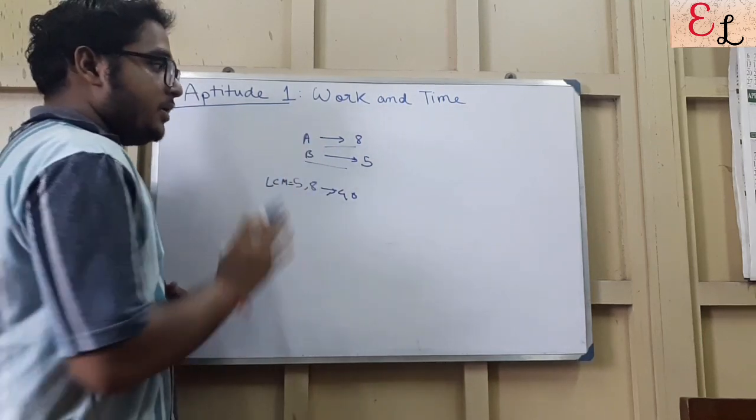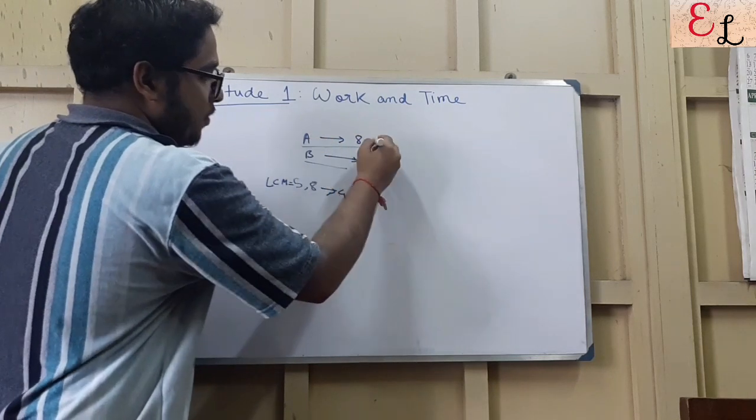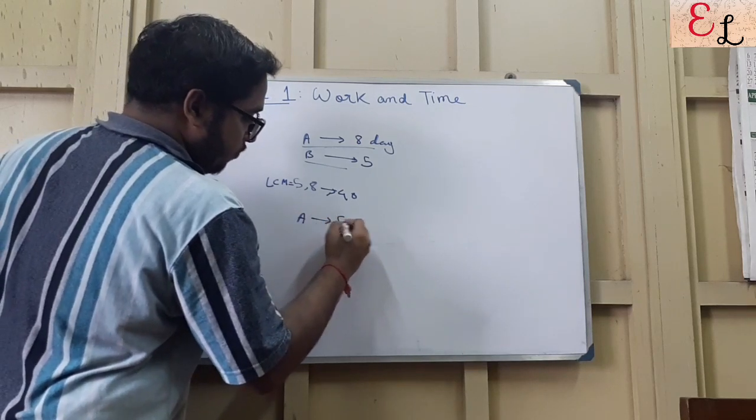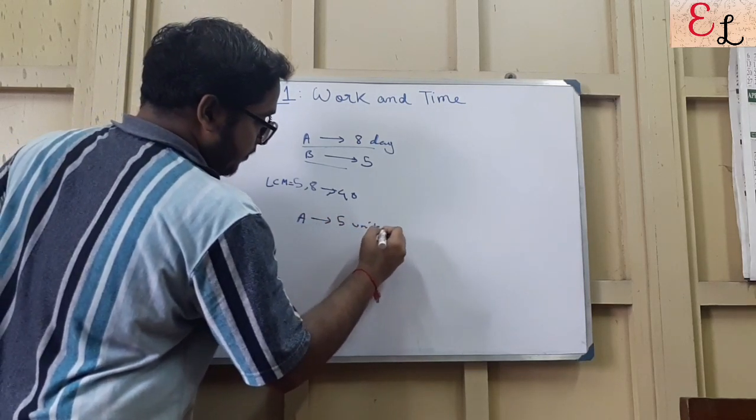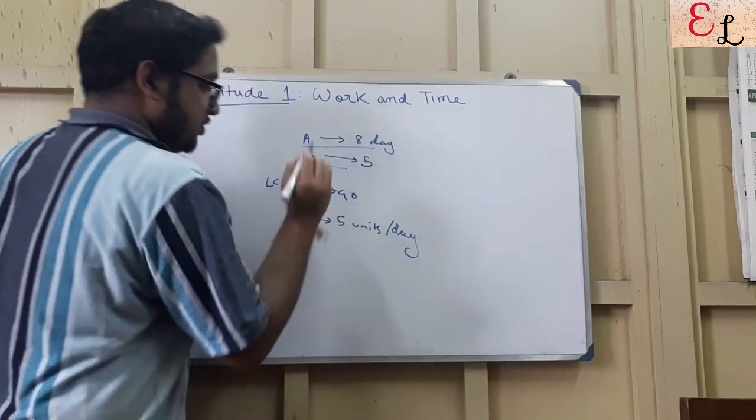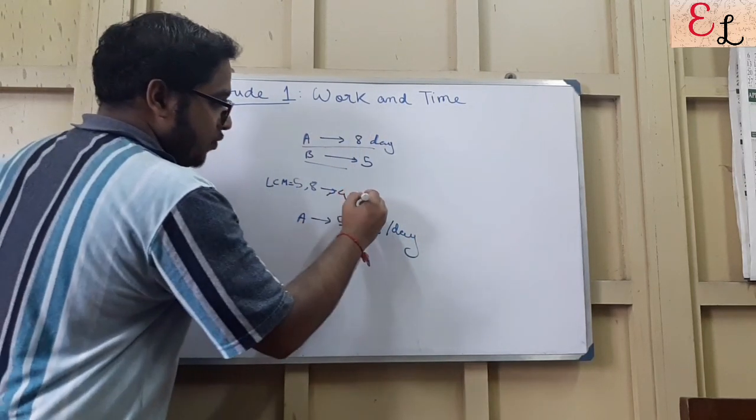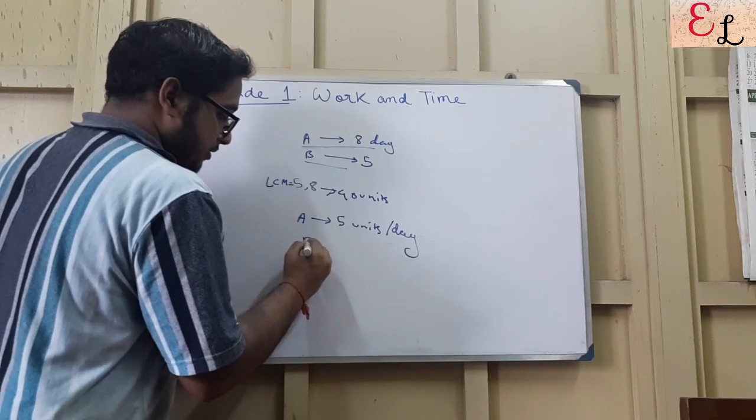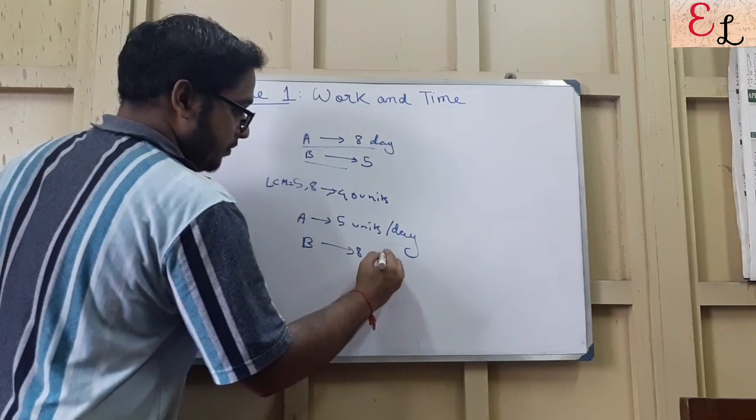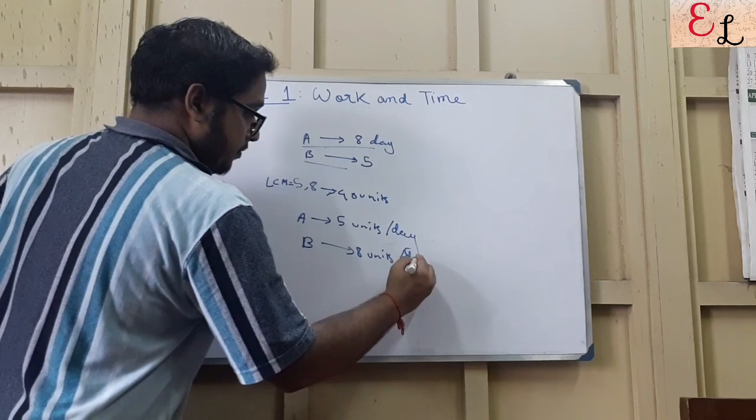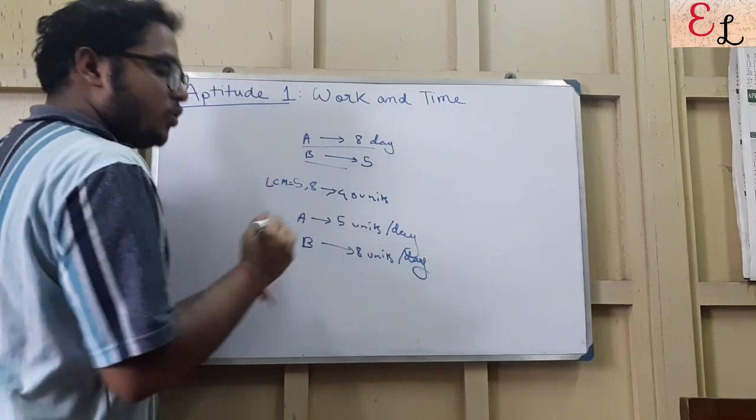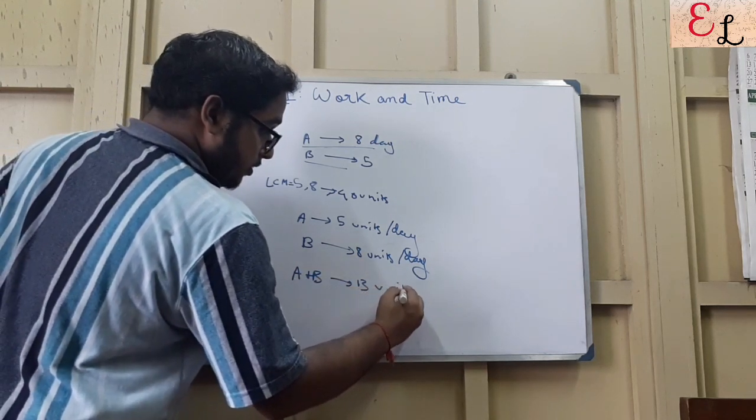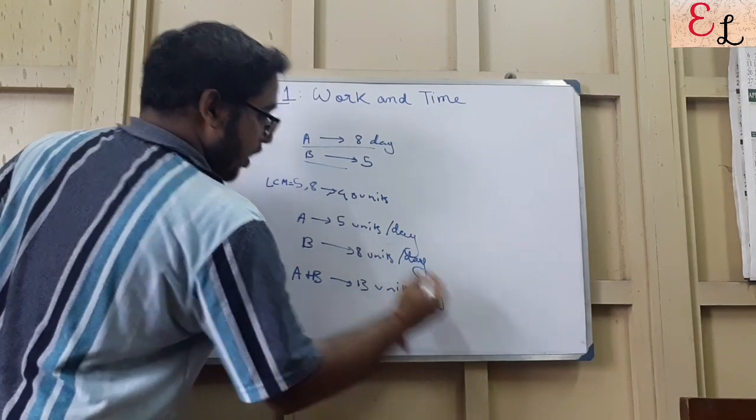Let us consider that 40 units of work is done. If A completes the work in 8 days and there are 40 units of work, then A does 5 units of work per day. Whereas B does 8 units of work. Now if they work together, they will be able to do 13 units of work each day.